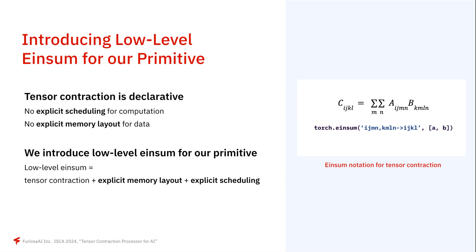Tensor contraction is declarative. It is a mathematical expression without explicit scheduling for computation or explicit memory layout for data. The equation on the right is tensor contraction expressed using Einstein notation. If we look at this example, it doesn't show any computation order, parallelism, or how the data is laid out in memory. To transform the tensor contraction expressed in Einstein notation into a primitive that can be executed by the architecture, we introduce a low-level Einstein notation. This combines tensor contraction with explicit memory layout and scheduling.